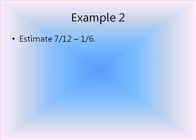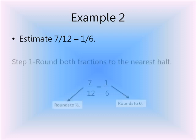For the next example, we're going to estimate 7 twelfths take away 1 sixth. Again, we're going to estimate by rounding both individual fractions.